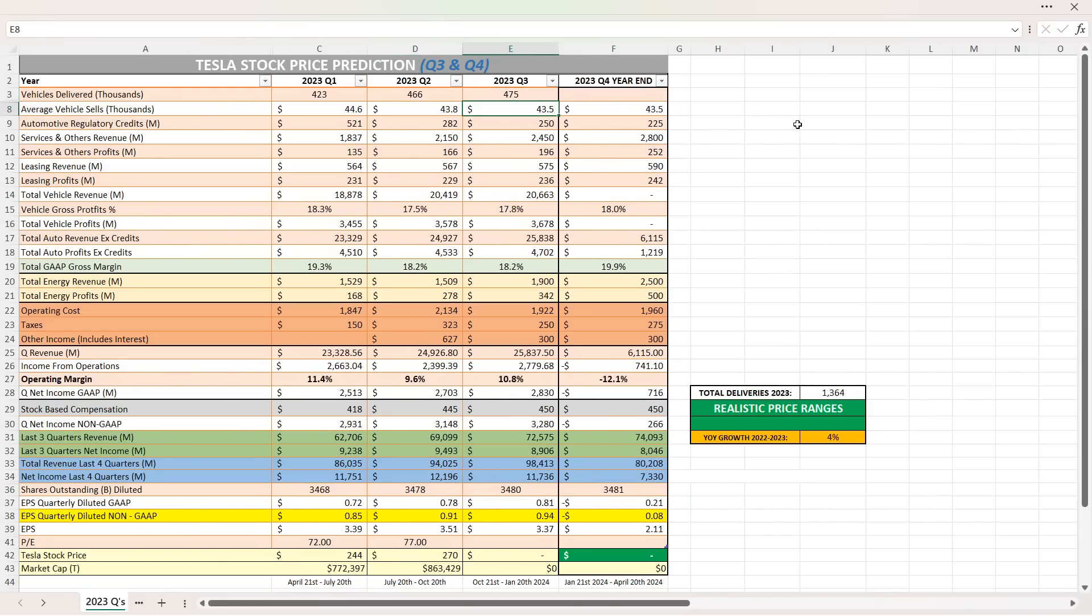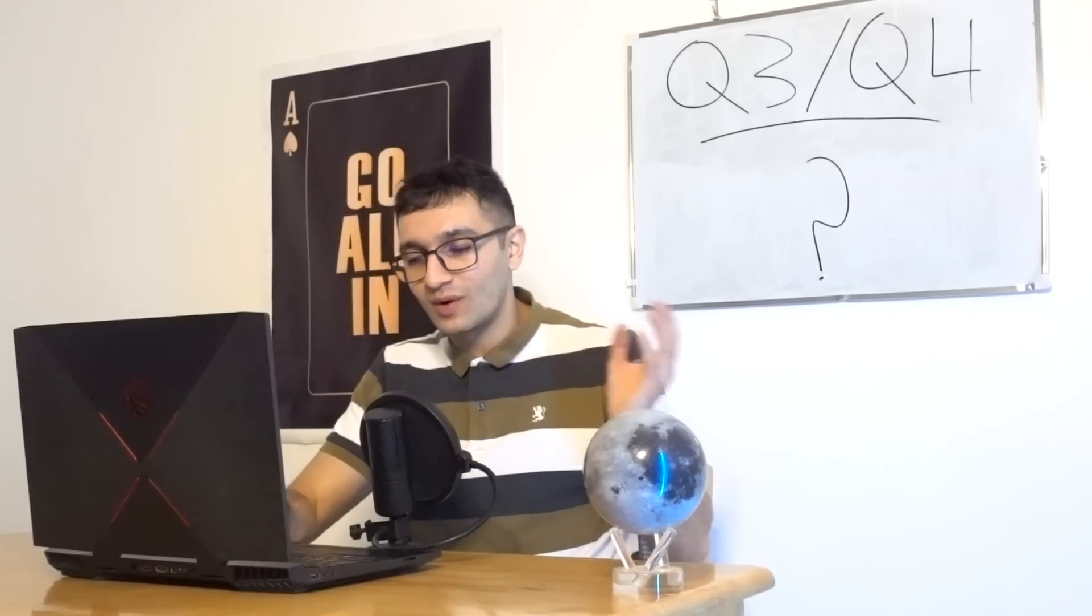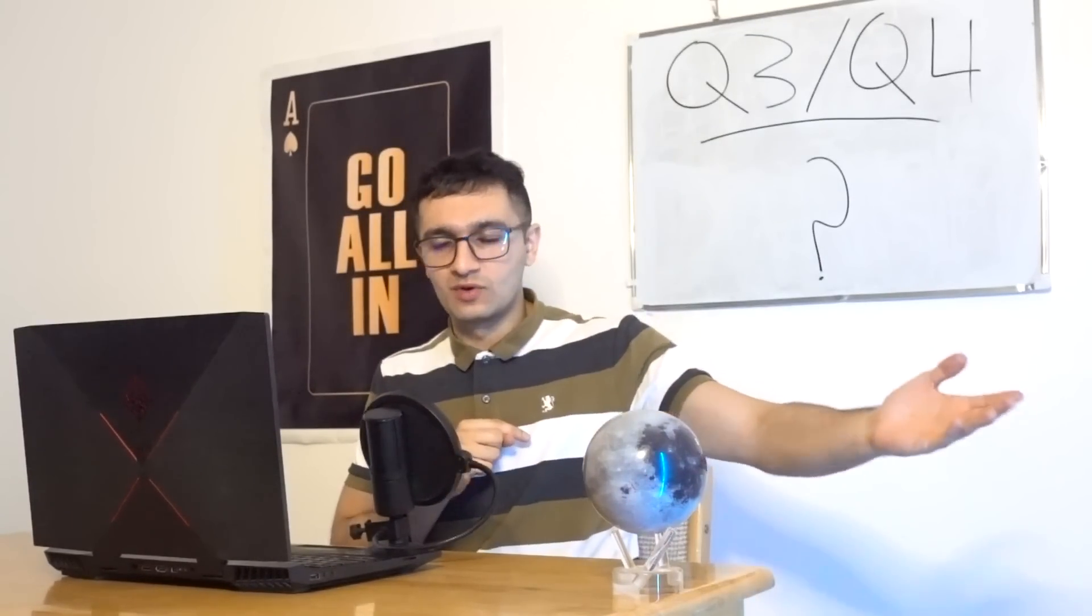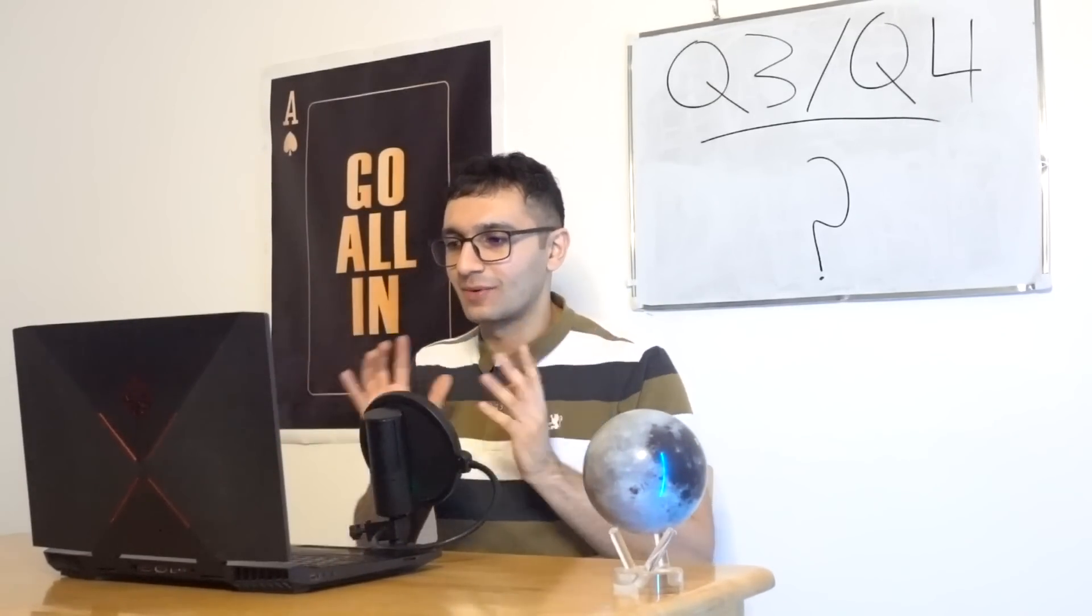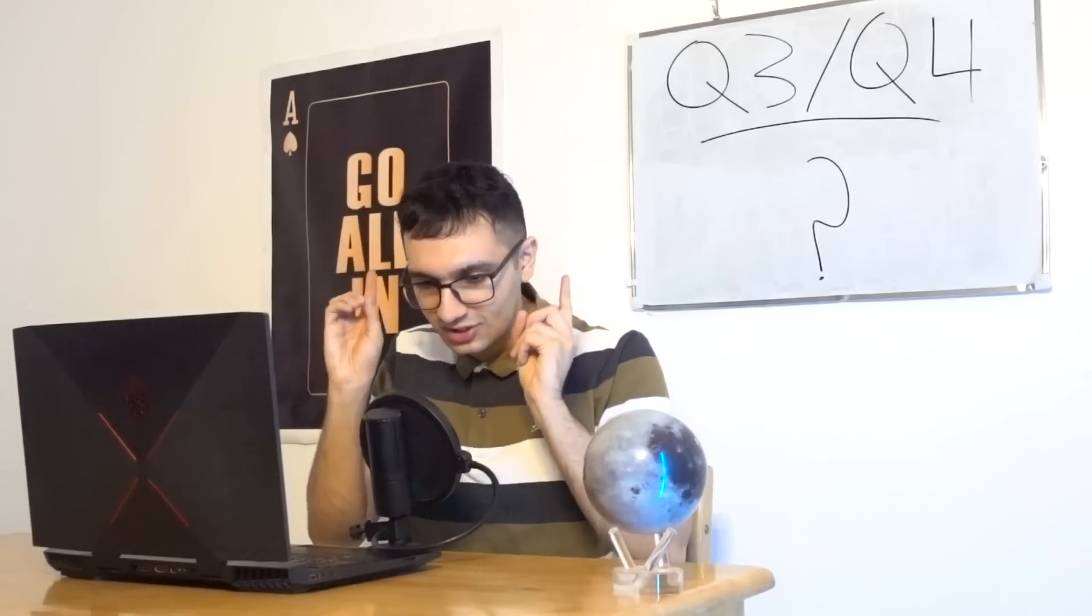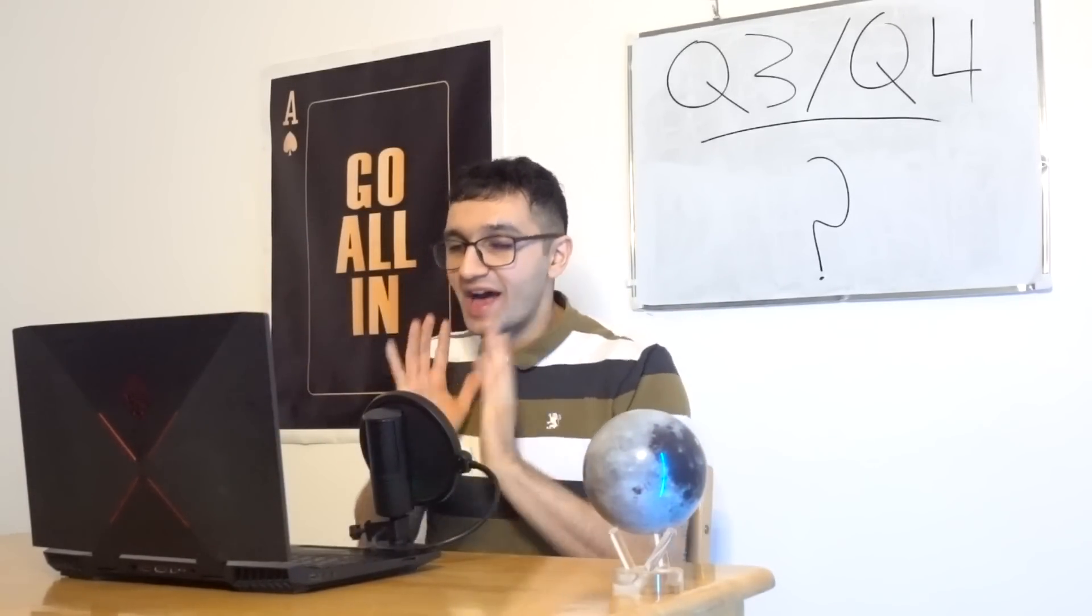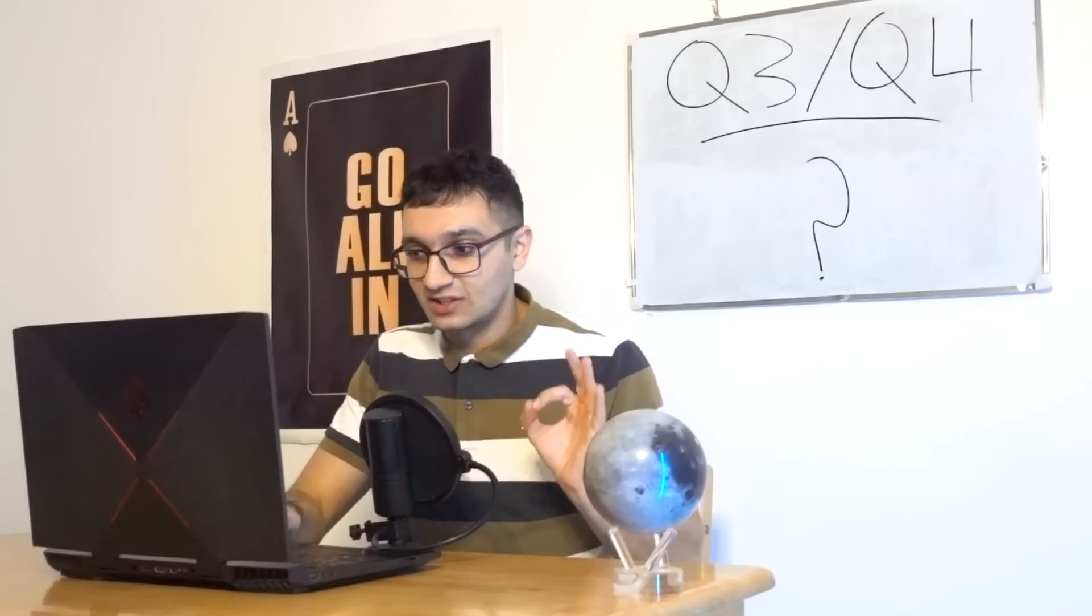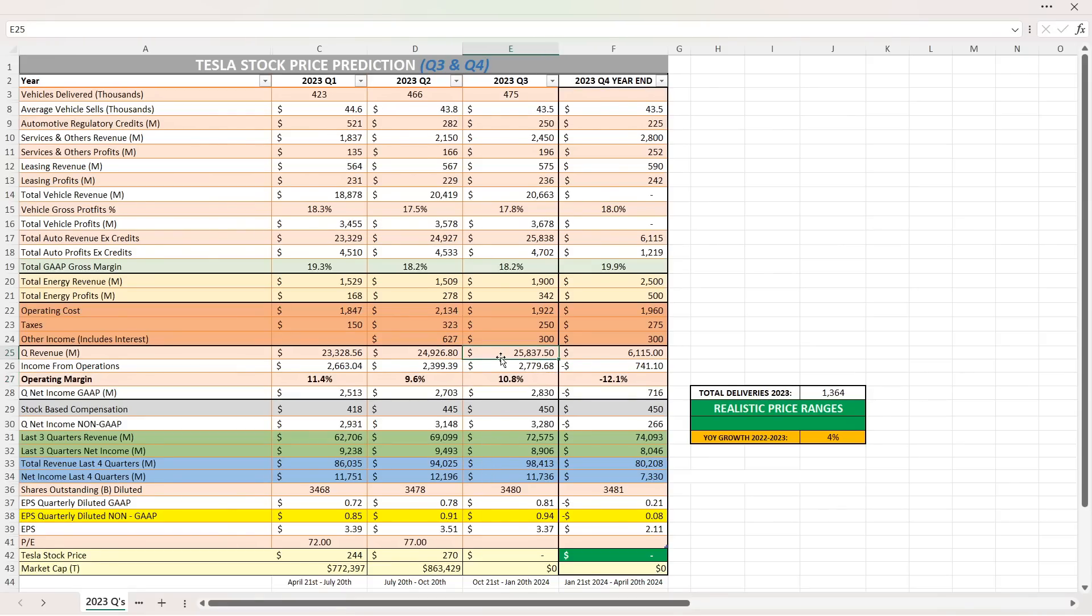Let's put in the vehicle deliveries and see what the numbers will get. 475,000 is what I'm guessing. We get 18.2% total GAAP gross margin, so that's the same as Q2. Operating margin 10.8%, more than the last quarter. But again, we gotta wait to see. I'm very curious to see what Shanghai deliveries for July are. We'll find out in about a week or so, and we'll make a video update on that. I'm more curious, I need to know how long the shutdowns are—is it one week, 10 days, two weeks, three days, four days? That is the most important part.